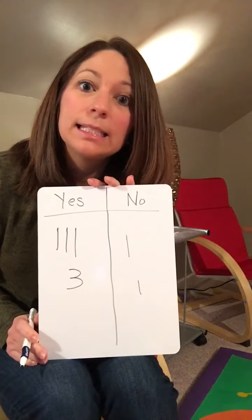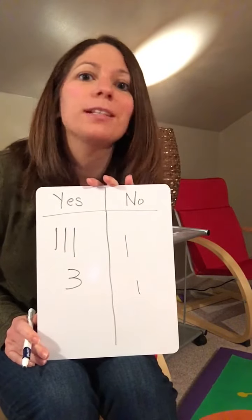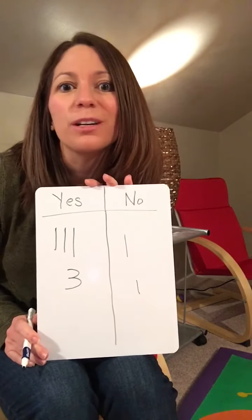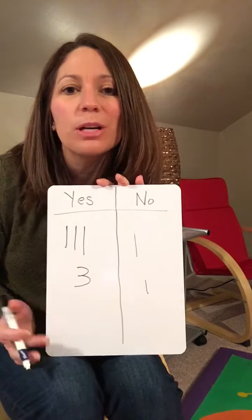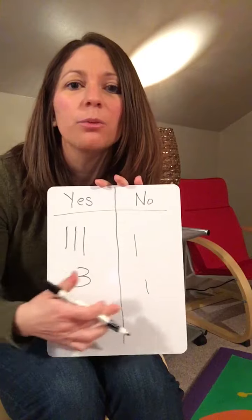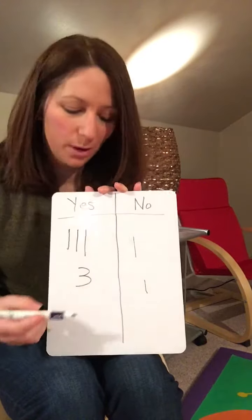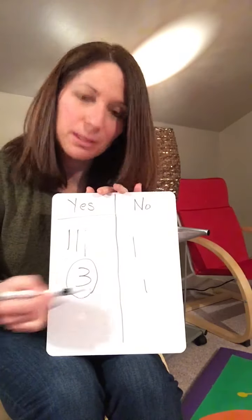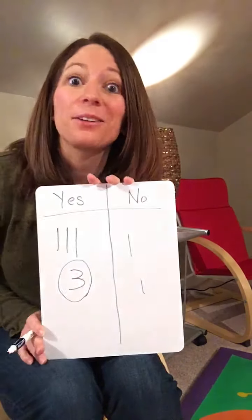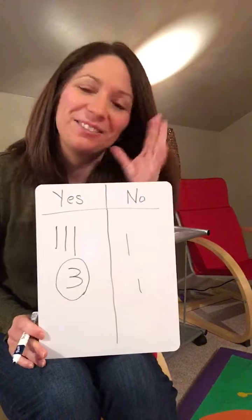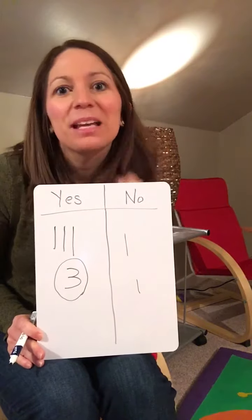Then I see which side was the winner — which number is bigger, three or one? The three is bigger, so I always circle that one. It was the winner!